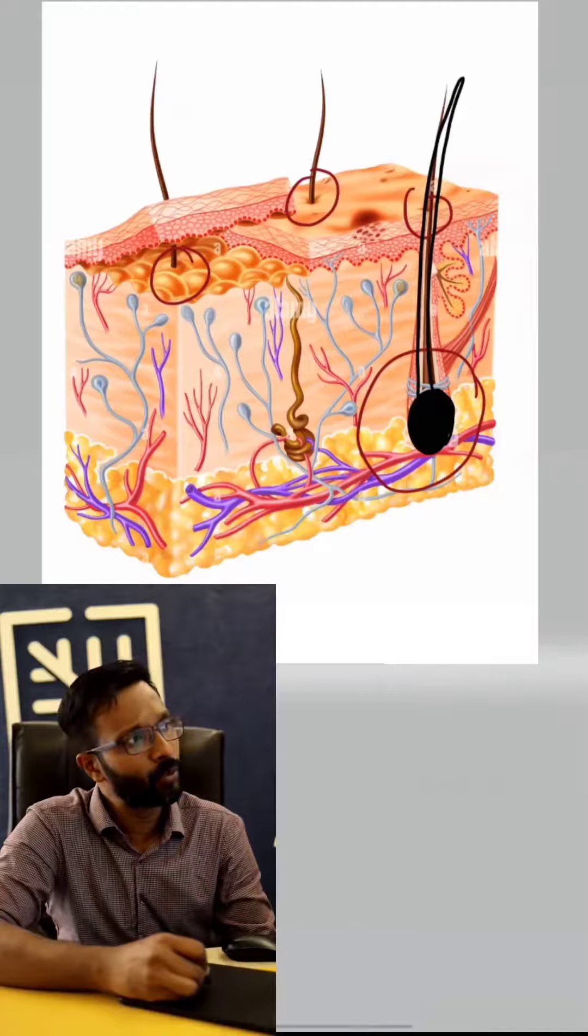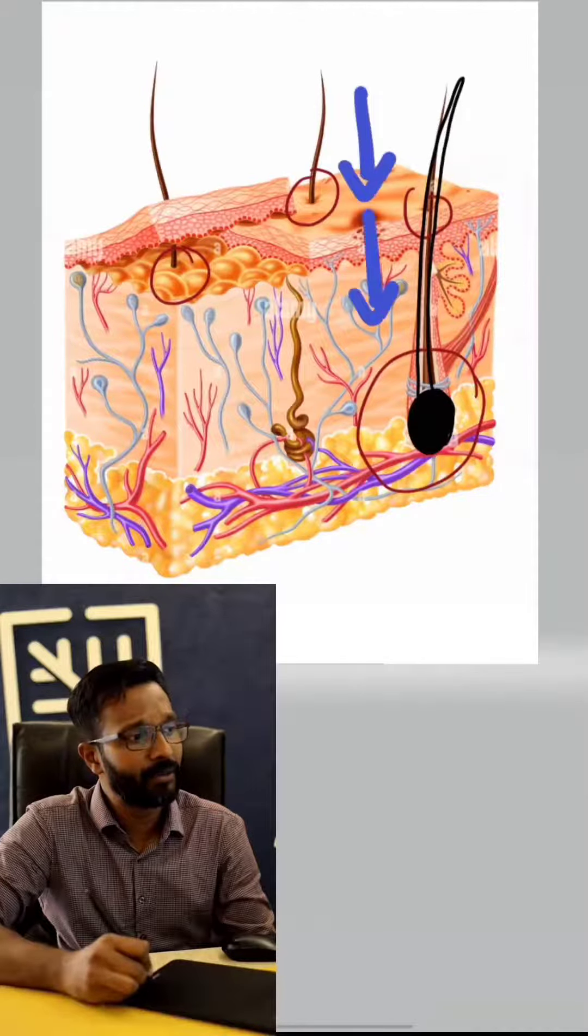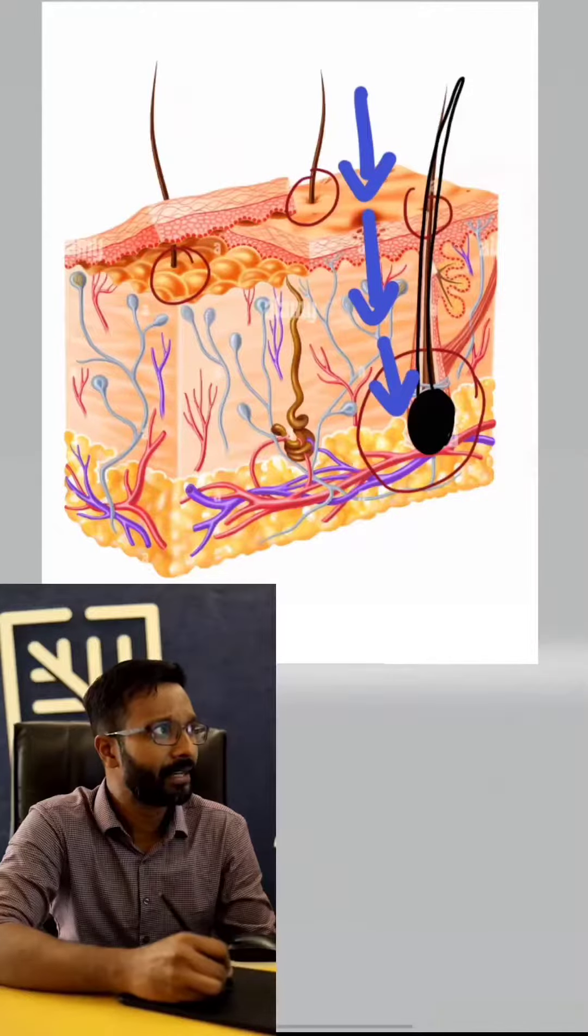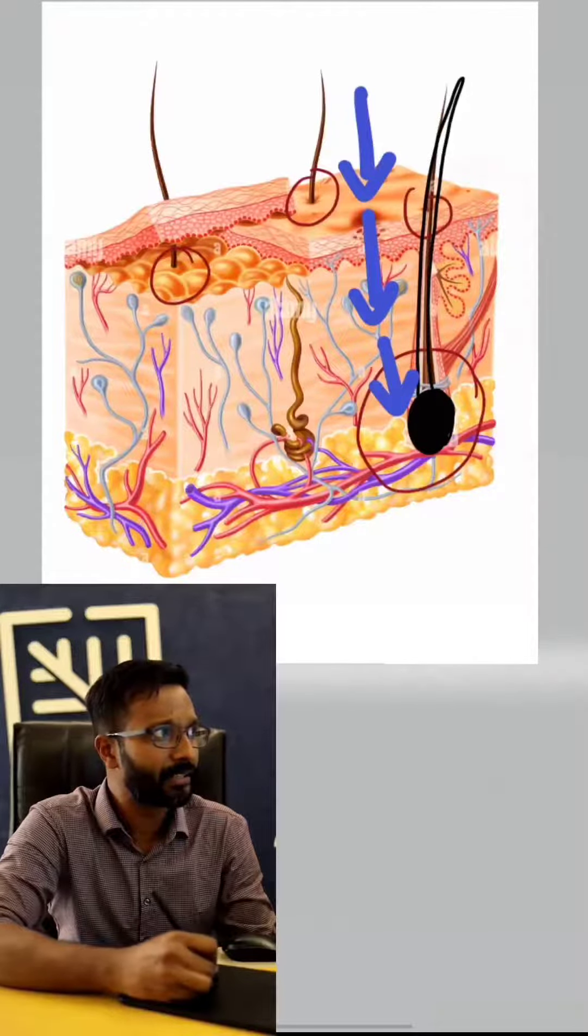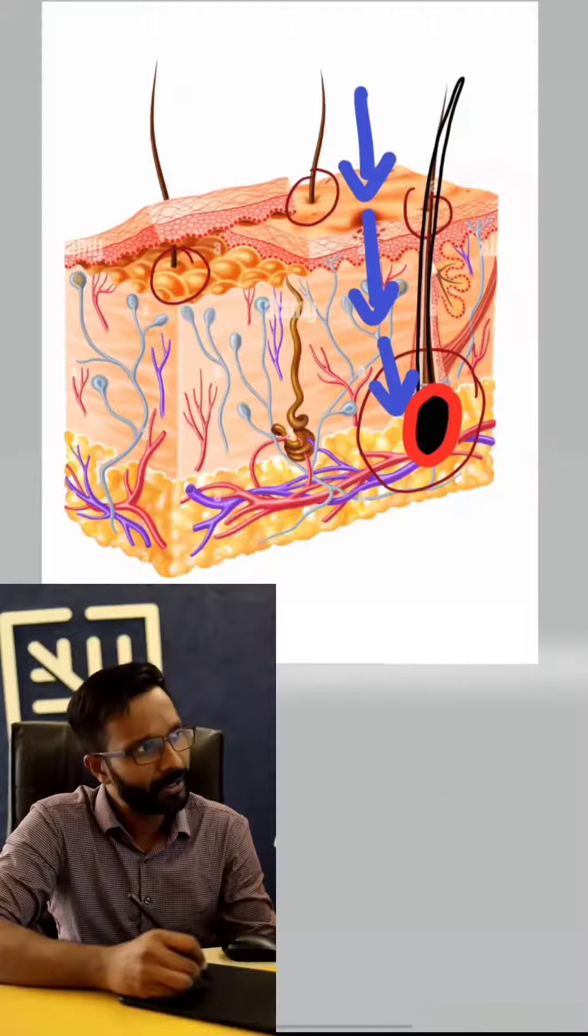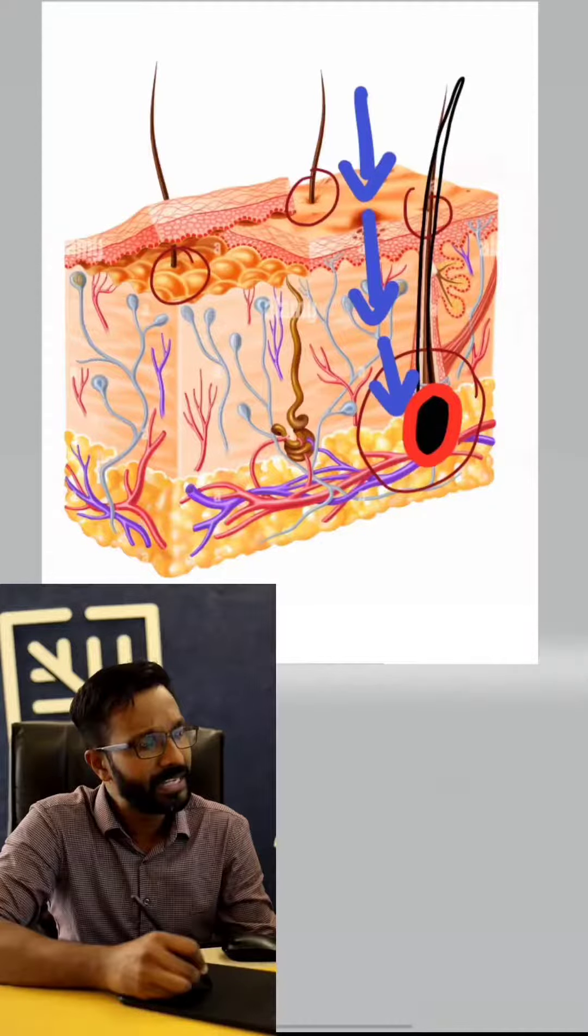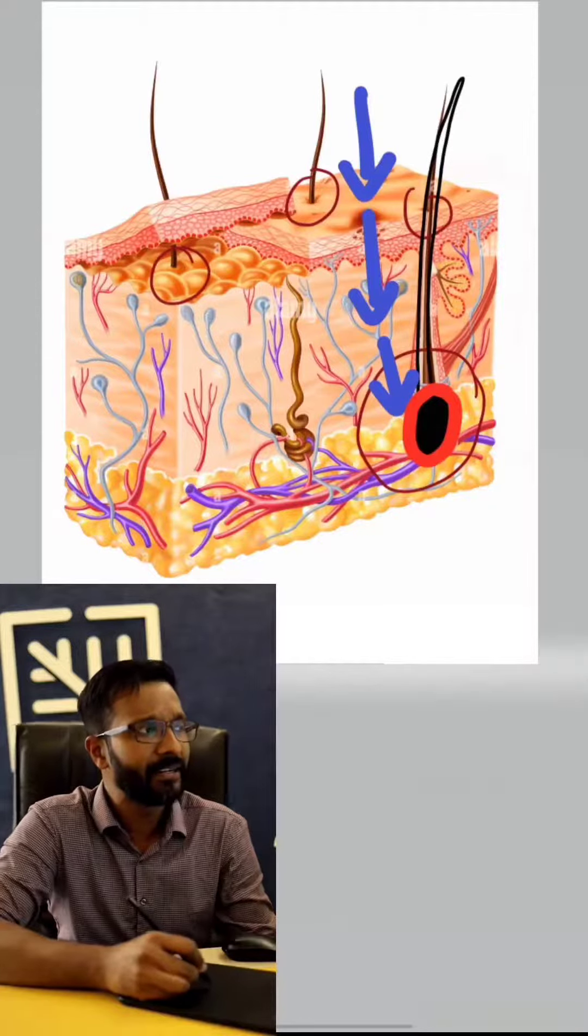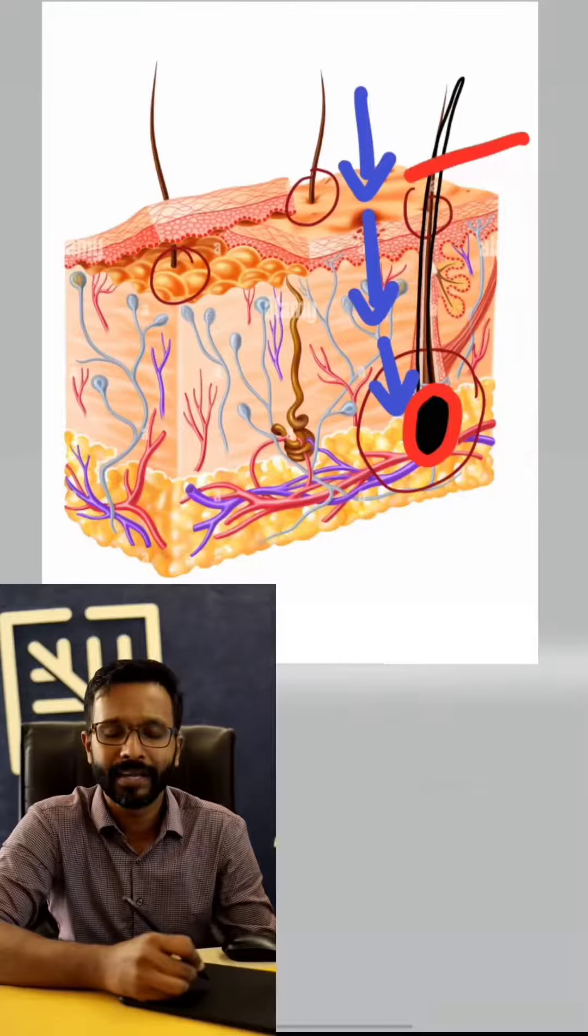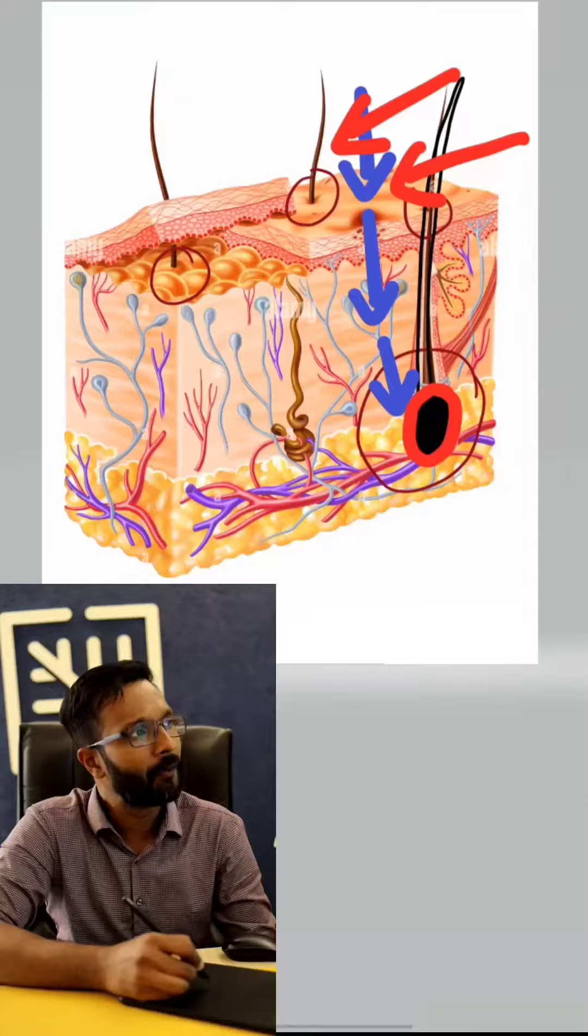Since melanin pigment absorbs light, when the laser penetrates deep into the skin, it reaches this bulb. The laser energy converts to heat. In that heat, the hair bulb burns. That's the principle of laser hair removal.